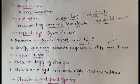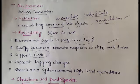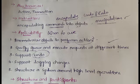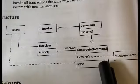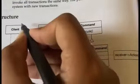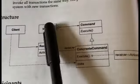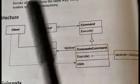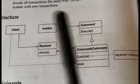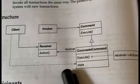Now after applicability, let's learn about the structure and participants. The participants in the Command Design Pattern are: Client, Invoker, Command, Receiver, and Concrete Command. Let us see the function of each of them.